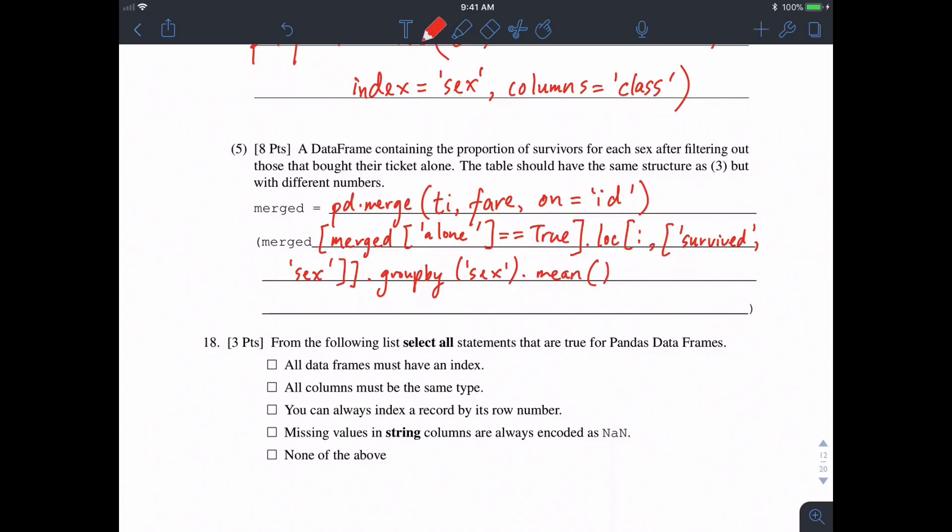In question 18, we're asked some relatively factual information. One, is it true that all data frames must have an index? Yes, that's true. That's usually the leftmost column. Two, all columns must be of the same type. That's definitely not the case, because we can definitely have a column with one with strings, and another with integers or floats or whatever. So that's not true. You can always index a record by its row number. Yes, that's true, even when the index is something other than numbers. For example, in the previous question, we merged by sex, not only can we index by female or male, but we could also index by row zero or one. Missing values and string columns are always encoded as not a number. That's not true either. So the only ones that are true here are options one and three.